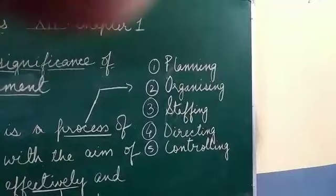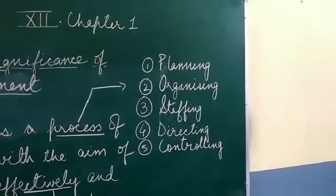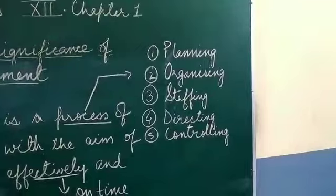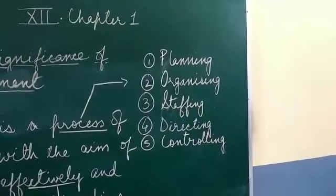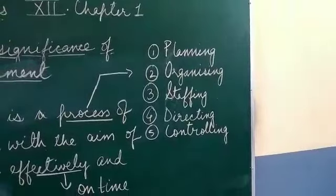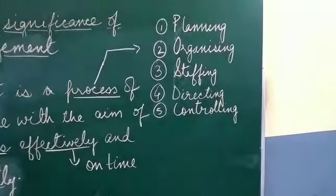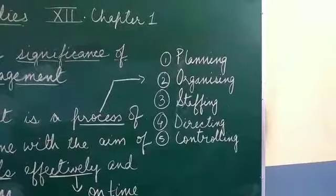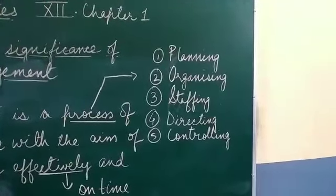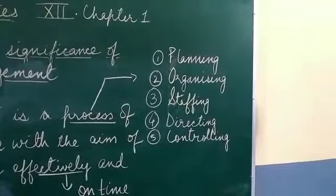As far as Management is concerned, Management is a process of the 5 functions of Management that is Planning, Organizing, Staffing, Directing and Controlling. So when we say Management is a process, it is not one activity but all these 5 activities combined together.